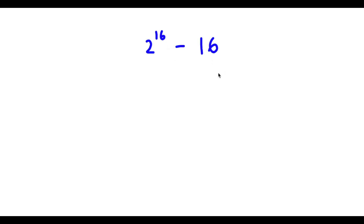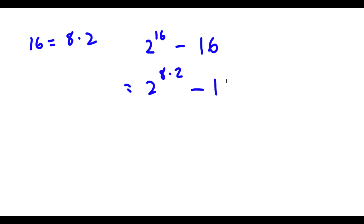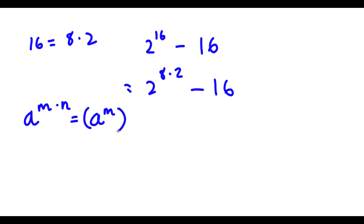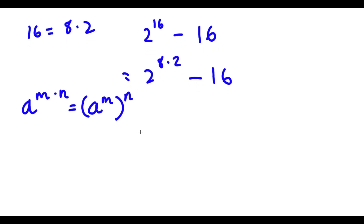So I have 2 to the power of 16 minus 16. Now 16 here is the same thing as 8 times 2. So now I can rewrite this as 2 to the power of 8 times 2, minus 16. And now, if I have something in the form a to the power of m times n, this is equal to a to the power of m to the power of n. So 2 to the power of 8 times 2, I'm going to rewrite as 2 to the power of 8, to the power of 2.